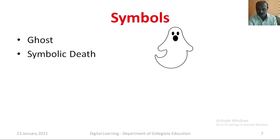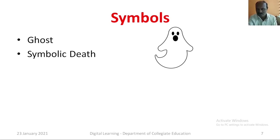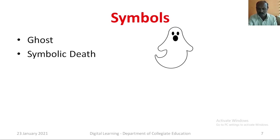Symbolic death: One night, Kadambini dies suddenly. Four Brahmin servants take her body to the burning ground for cremation. In the absence of the Brahmin servants, she awakens alone — she had not in fact died but had only been temporarily unconscious. Seeing the cremation ground around her in the dead of night, she believes that she has died and that she is now a ghost. Here the death is symbolic because as a widow, Kadambini was more dead than alive. Widows are not allowed in any ritual in Hindu society.